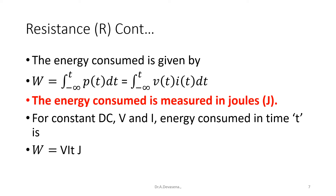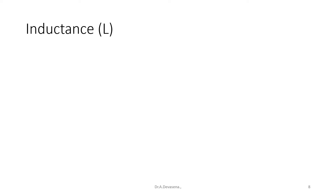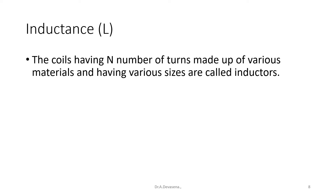For constant DC V and I, energy consumed in time t is W is equal to V I t joules.